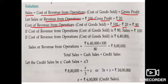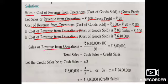Let revenue from operation = 100. Gross profit = 20%, so cost of revenue from operation = 80. If cost is 80 then sale is 100. Given cost = ₹6,40,000, so revenue from operation = ₹6,40,000 × 100/80 = ₹8,00,000.